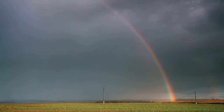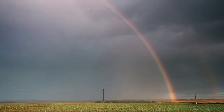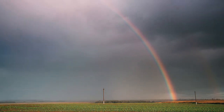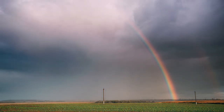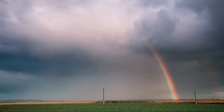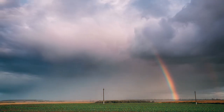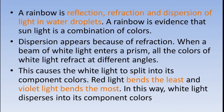This causes the white light to split into its component colors. Red light bends the least, and violet light bends the most.